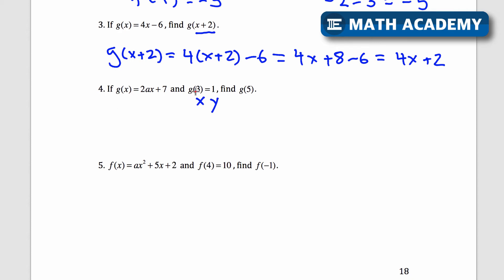If I input g of 3, so g of 3, if I input 3, I get 1. And that would be the same as 2 times a times my input 3. That's 2a times 3 plus 7. And now I have an equation where I can solve for a. So this gives me 1 equals 2 times 3 would be 6a plus 7. 1 equals 6a plus 7. I'll subtract 7 on both sides. Negative 6 equals 6a. That tells me that I get negative 1 is equal to a.